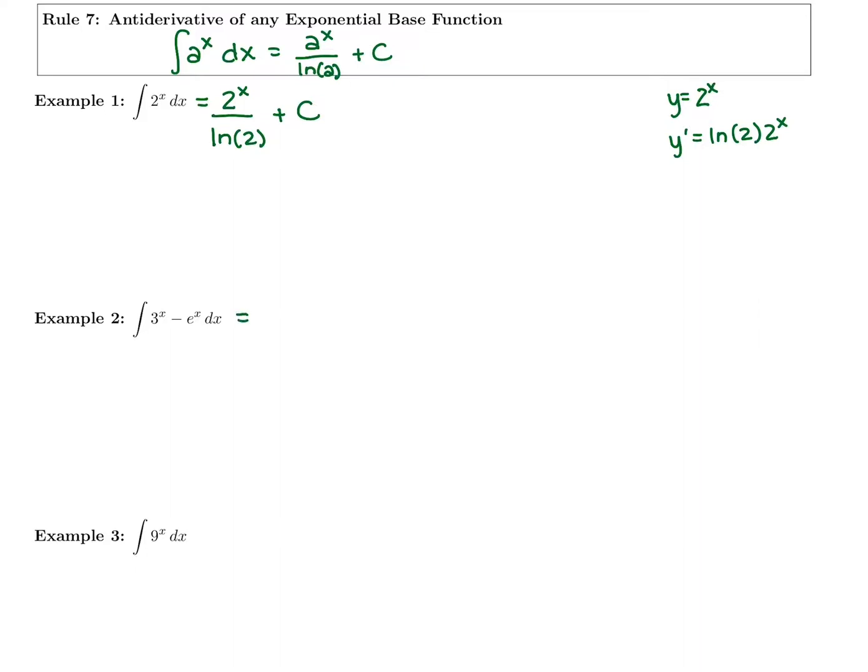We have 3 to the x, so it would be 3 to the x over ln of 3 minus the antiderivative of e to the x. You could say e to the x over ln of e. We normally didn't do that because ln of e just equals 1, so we don't typically take the time to write that. The antiderivative of just e to the x is e to the x plus c. So that's the only base where you don't have to divide by ln of your base.